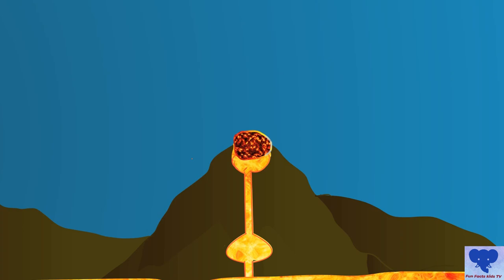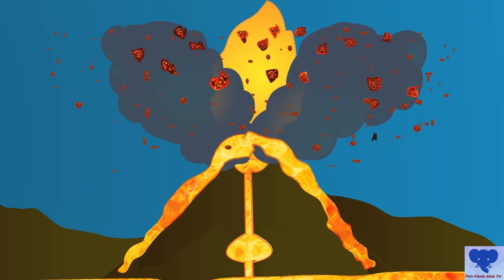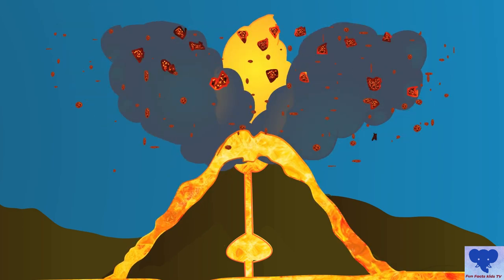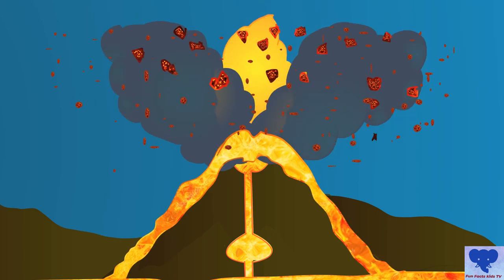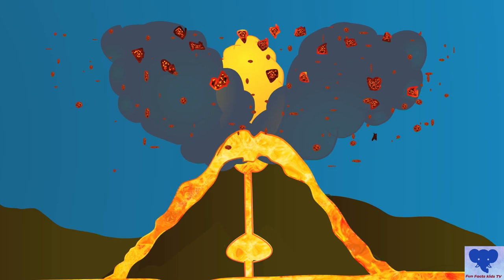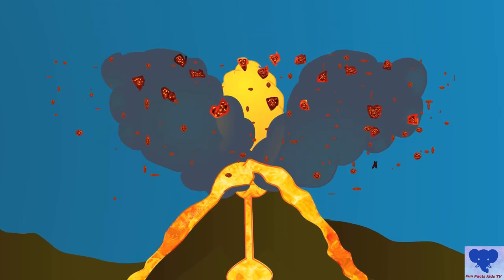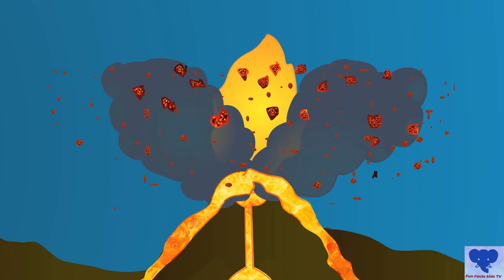The pressure in the magma is suddenly released, just like the cap of a fizzy drink bottle. The volcano explodes, erupting jets of steam and clouds of ash and cinder. The magma gushes out of the top and turns into red-hot lava.